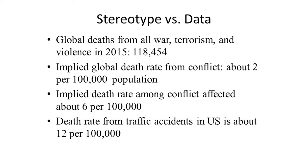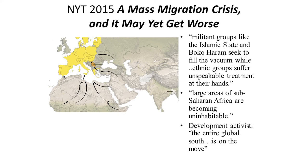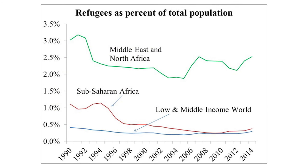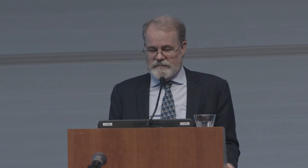The New York Times wrote an article about the migration crisis with remarkably stereotypical images, claiming 'large areas of Sub-Saharan Africa are becoming uninhabitable' and 'the whole global south is on the move.' What's the actual number of refugees? The antidote to stereotypes is just going to the real data. Sub-Saharan Africa's percent of the population that are refugees has been going down and is now about 0.5%. There is of course a larger refugee problem in the Middle East and North Africa, but it's been around for a long time — still only about two and a half percent of the population.